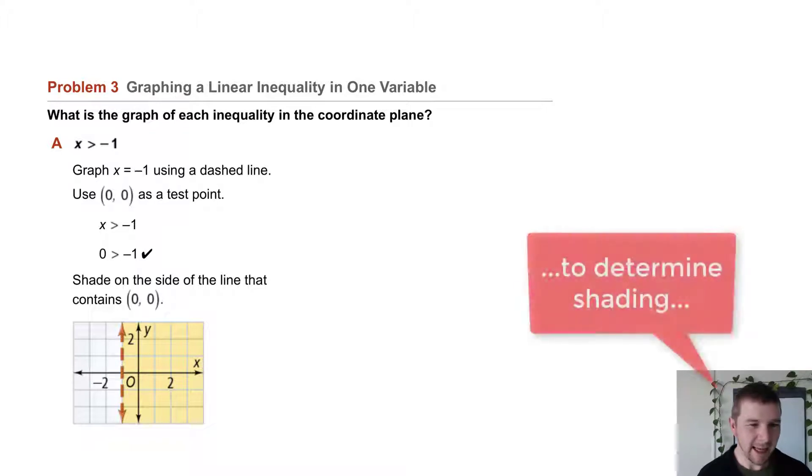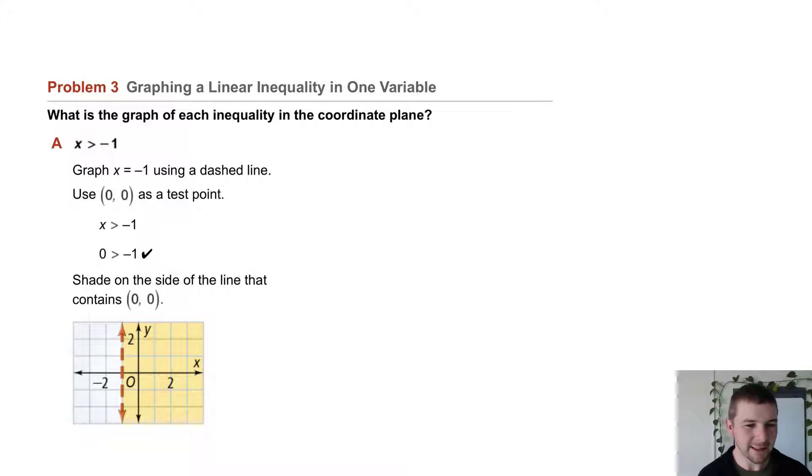Now using the other technique, x is greater than negative 1. X increases as we move to the right on the coordinate plane, so that would also indicate to us to shade to the right of our dashed line.